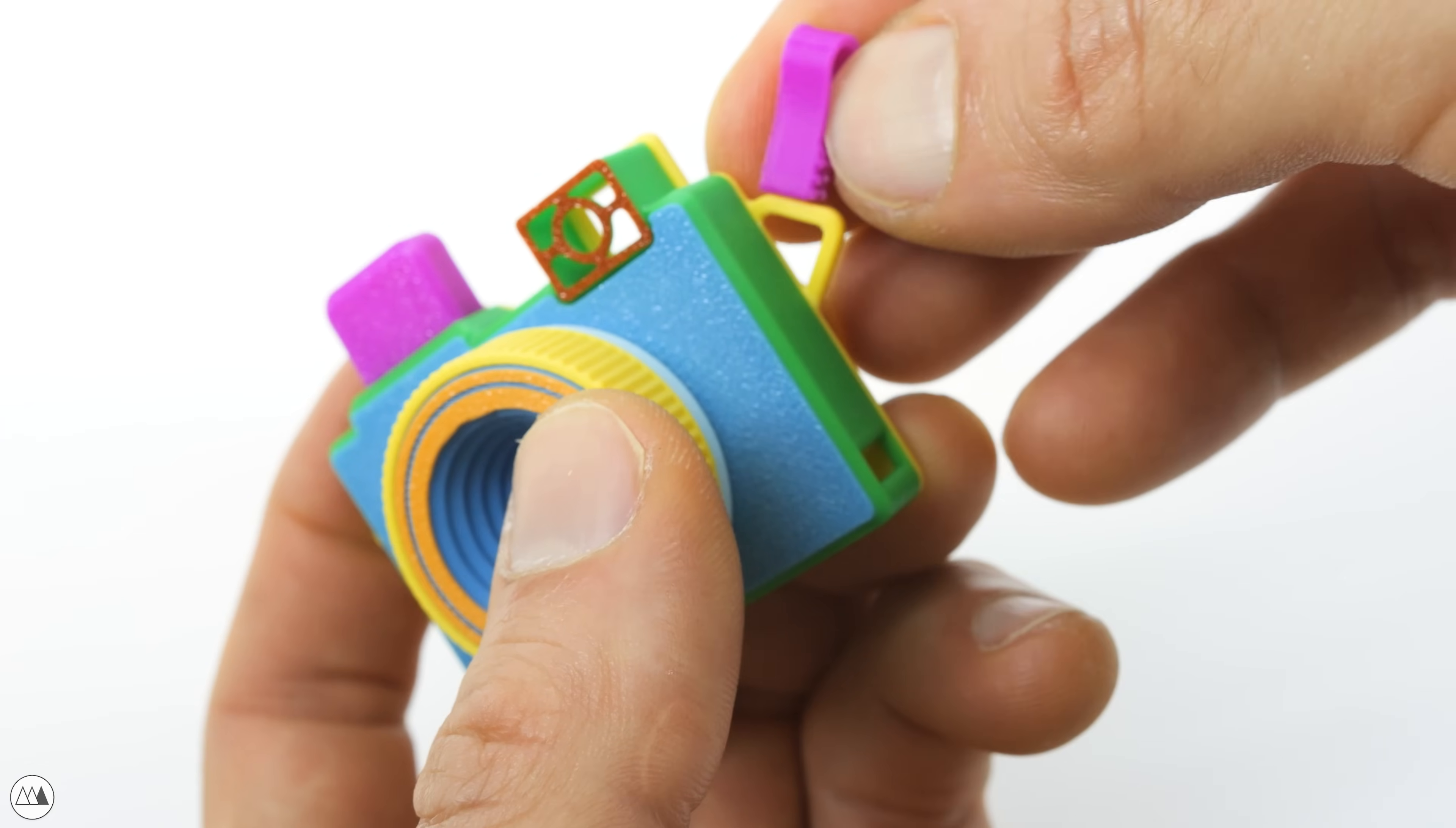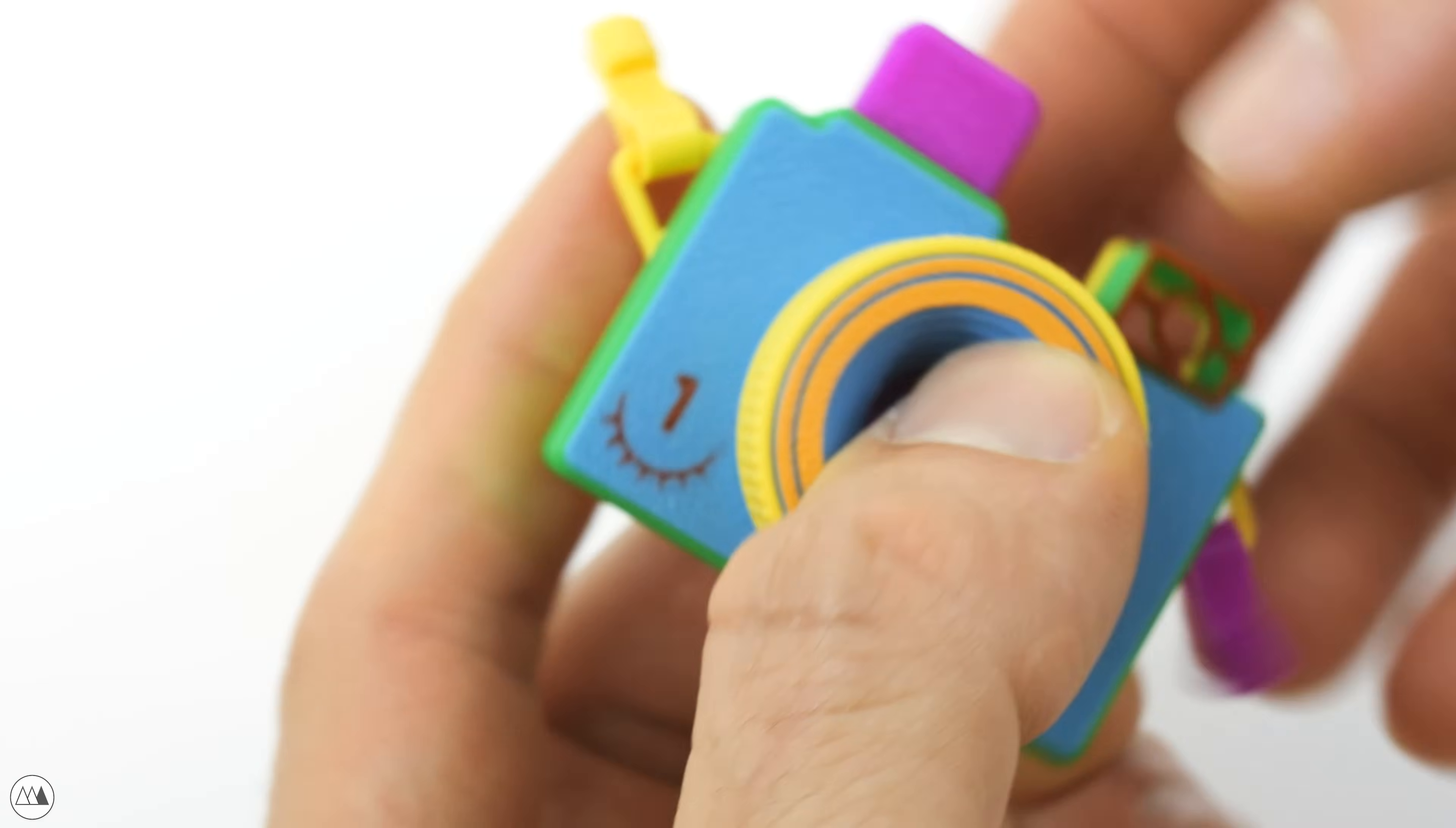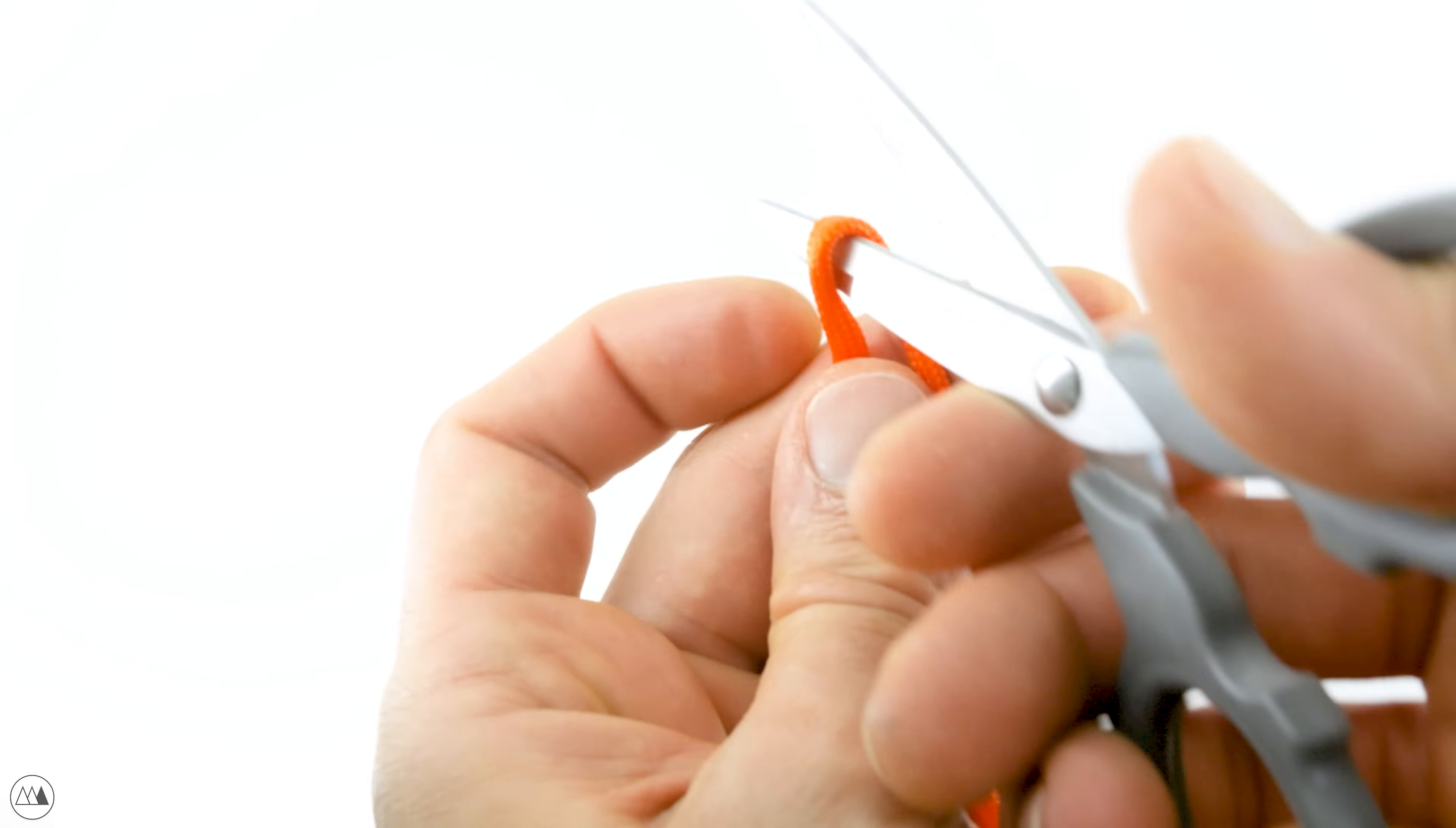Now I'll add the optional strap. While you're welcome to connect any strap you desire, I've designed these special strap connectors to be compatible with the Momentus Mind camera. They work with widely available paracord, which you can get in any number of colors, and it's quite easy to work with.